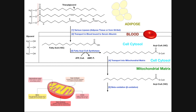Here's a triacylglycerol, also called a triglyceride. A triacylglycerol is basically just a storage form of fatty acids. We have a glycerol backbone — glycerol is a three-carbon molecule — and each oxygen of this glycerol is bound to a fatty acid. Because there are three oxygens, we can have three fatty acids bound to this glycerol. This is termed a triacylglycerol or triglyceride, and it is the storage form of fatty acids in adipose tissue.